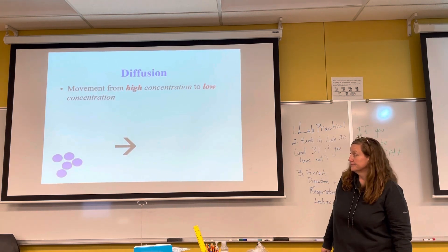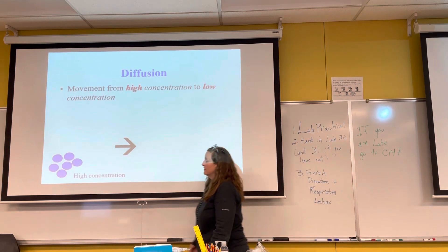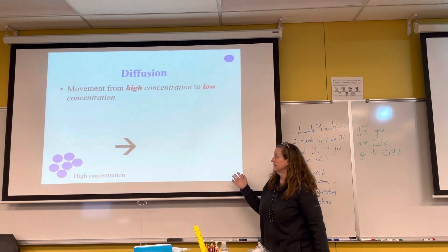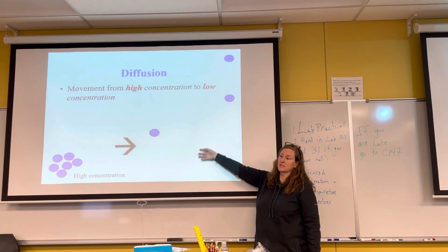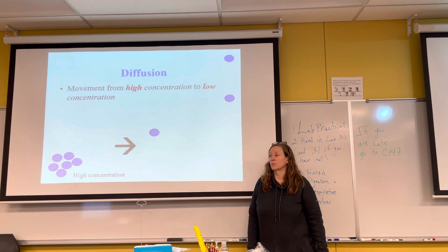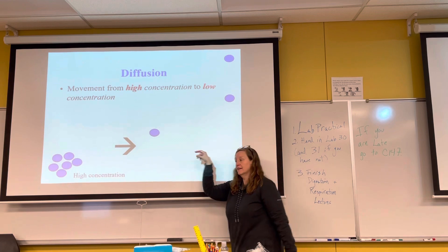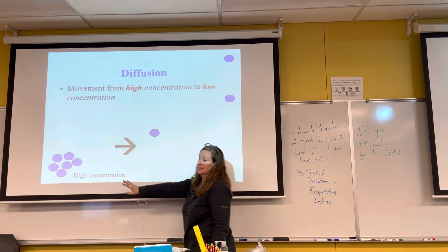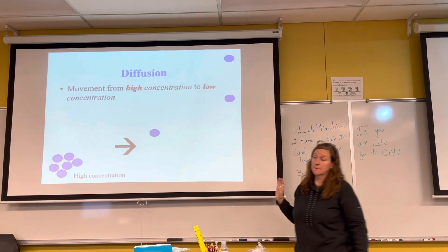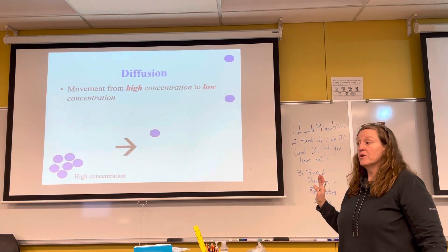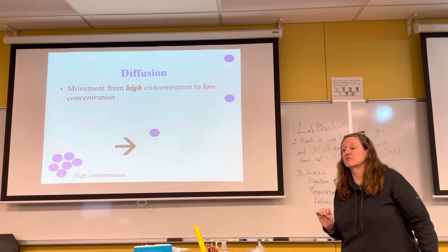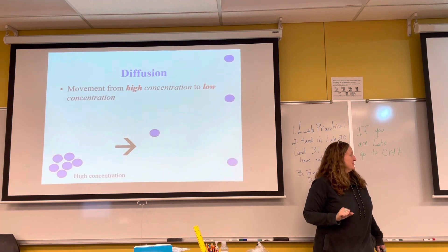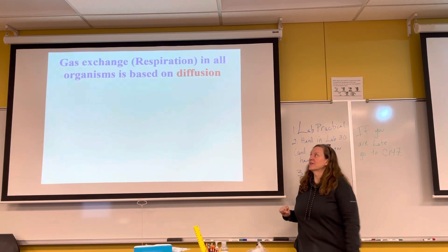If you have a high concentration of oxygen in your blood and a low concentration in your cell — because the cell has used up most of the oxygen for cellular respiration — oxygen in our blood will diffuse from high concentration in the blood to low concentration in the cells. Osmosis is the movement of water, and it's a form of diffusion specific to water.